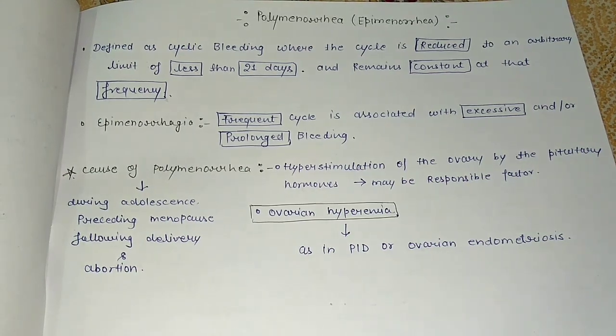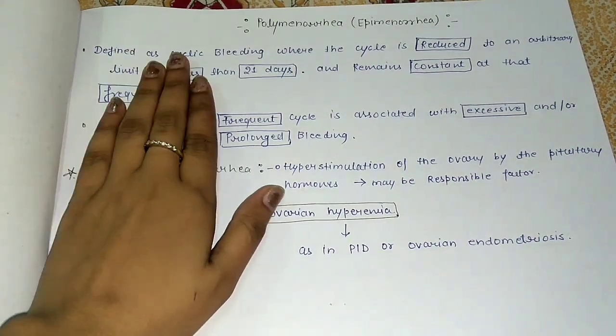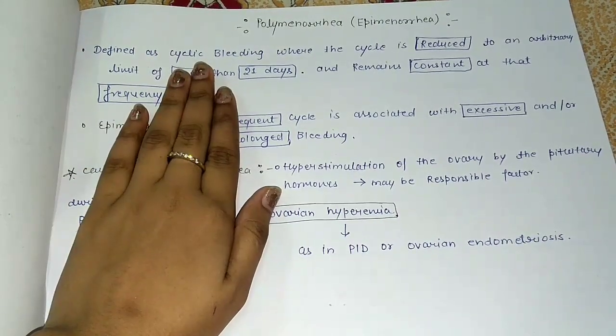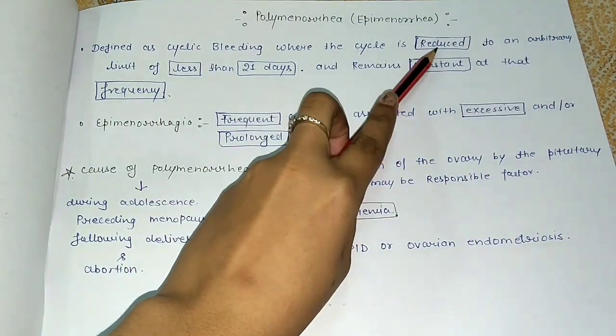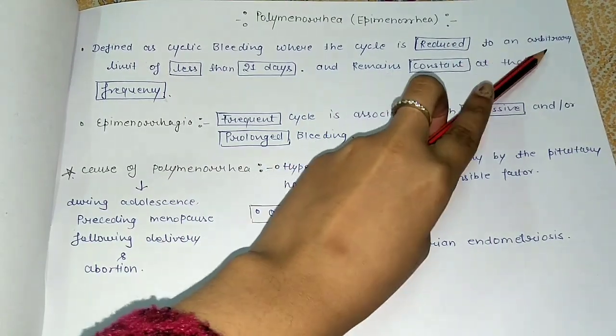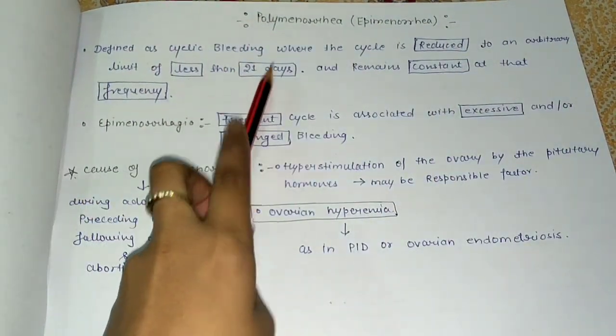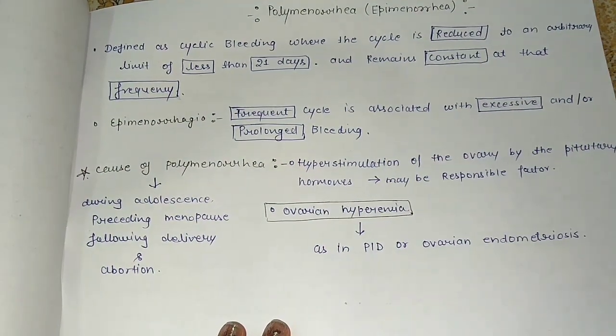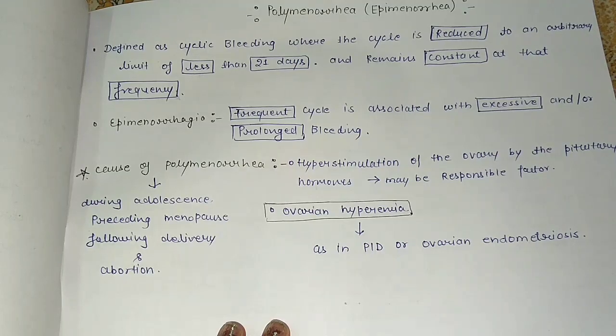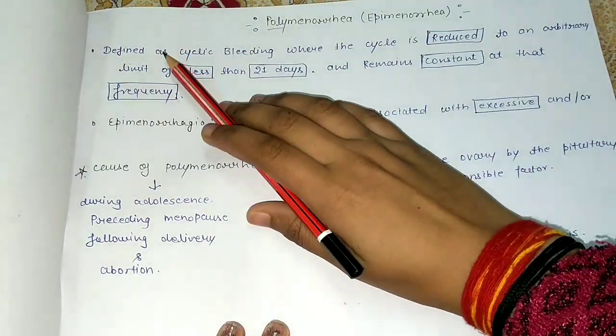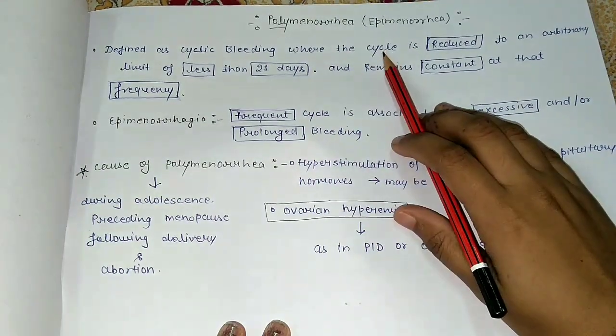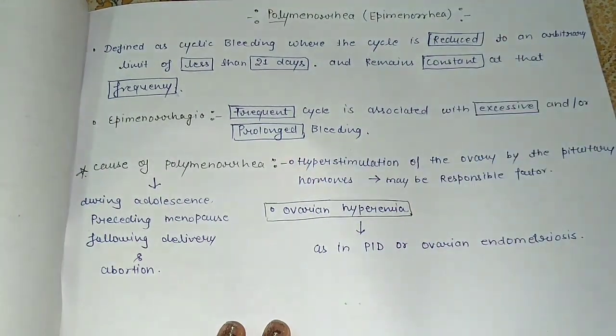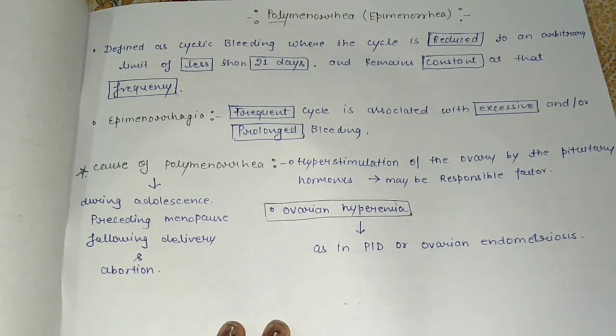Now let's start the topic polymenorrhagia. Polymenorrhagia, also called epimenorrhagia, is defined as cyclic bleeding where the cycle is reduced to an arbitrary limit of less than 21 days and remains constant at that frequency. So this is cyclic bleeding where the timing of the cycle is reduced to less than 21 days. We call it polymenorrhagia.